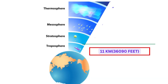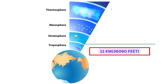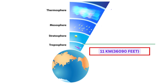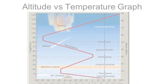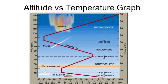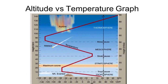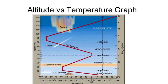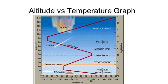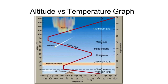Troposphere is the lowest portion of the atmosphere. It extends from ground level up to a height of 11 km or 36,090 feet. In troposphere, temperature reduces with increase in height. The rate of reduction of temperature with height is called lapse rate.